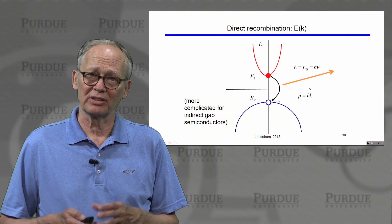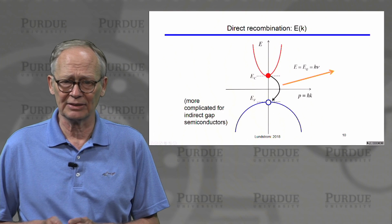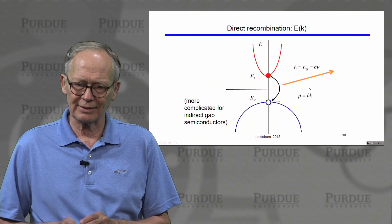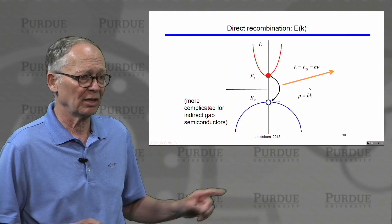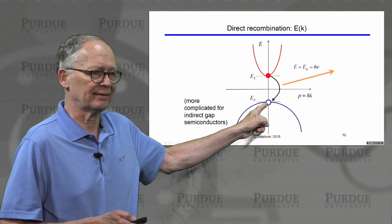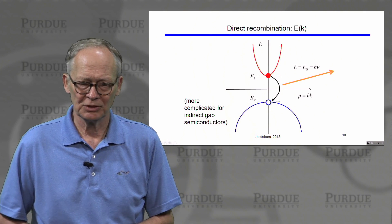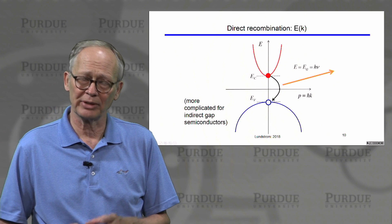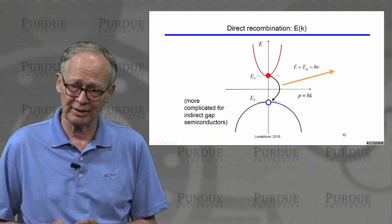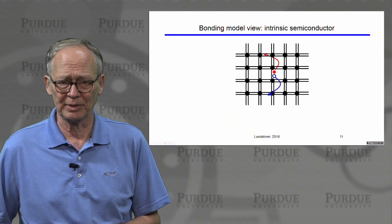We also talked about how recombination can occur — an electron in the conduction band can drop down and fill a hole in the valence band, and the energy can be given off in the form of light. We use this property to produce light-emitting devices like LEDs and semiconductor lasers. This process happens in a direct-gap semiconductor, where the minimum of the conduction band energy is at the same momentum as the maximum of the valence band energy. Gallium arsenide has that property, but silicon does not, so silicon is not a good light emitter.